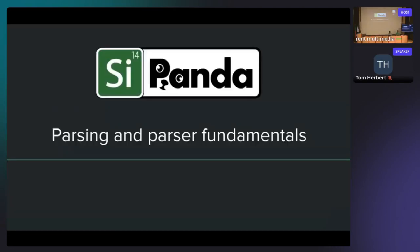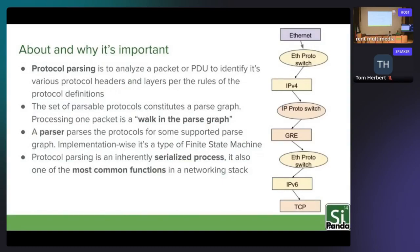Protocol parsing can be defined as analyzing a packet or a PDU to identify the various protocol headers and layers in the packet. These protocol layers and headers follow some specification of the protocol definition. Parsing is really identifying them so that we can apply the semantics and use them in processing. The set of parsable protocols constitutes a parse graph, which is composed of a set of nodes, and the linkage between each of those creates the parse graph.